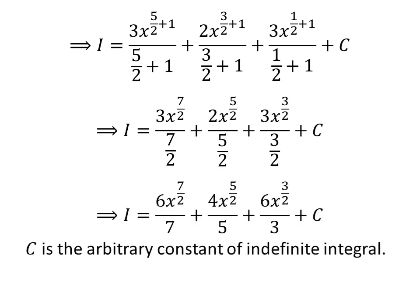Further simplification gives us I is equal to 6 times x raised to the power of 7/2, divided by 7, plus 4 times x raised to the power of 5/2, divided by 5, plus 6 times x raised to the power of 3/2, divided by 3, plus capital C.